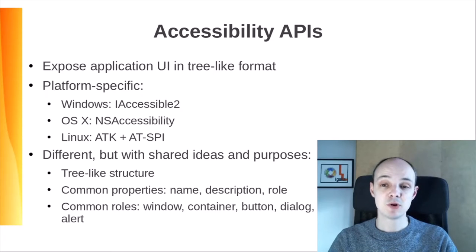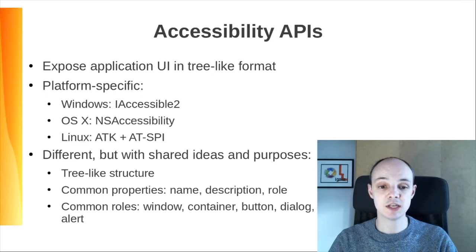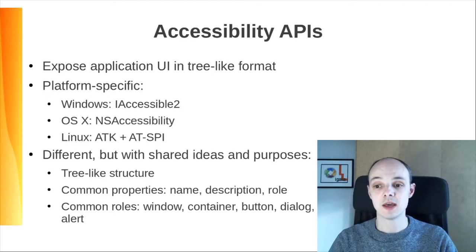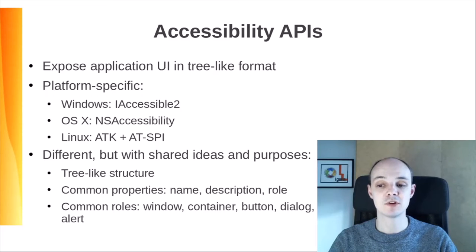These APIs expose the application UI in a tree-like format for ATs to consult and even manipulate. They are platform-specific. On Windows, it's called iAccessible2. On OSX, it's called NSAccessibility. On Linux, for historical reasons, there are two APIs: one for applications, ATK, and the other one for ATs, ATSPI. All these APIs are different, but with shared ideas and purposes. They take ideas from each other as well as from other accessibility systems like the one in Java.